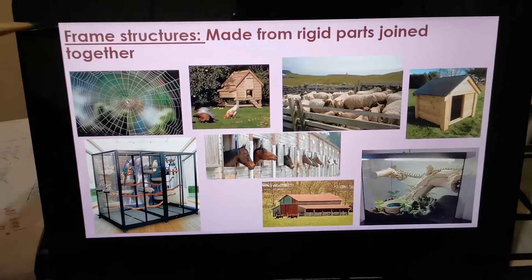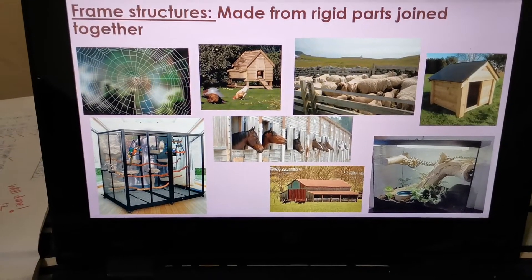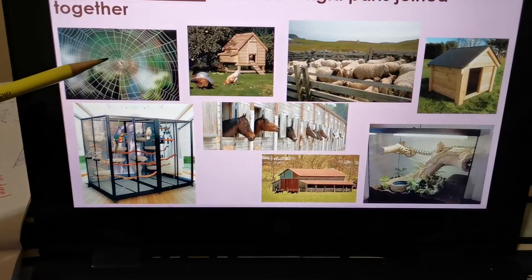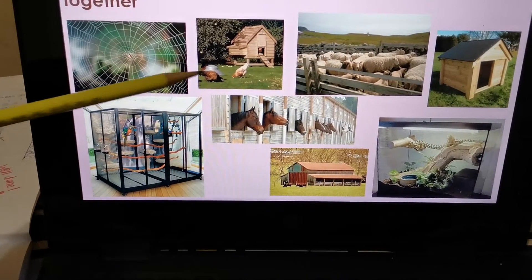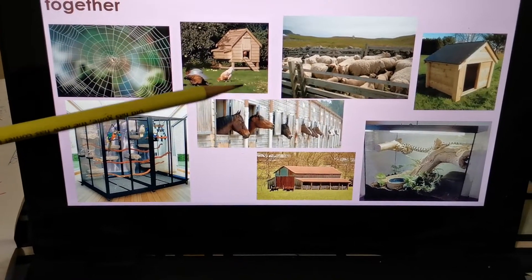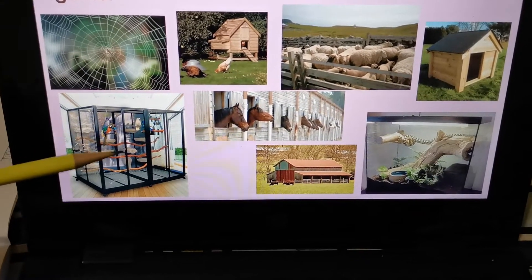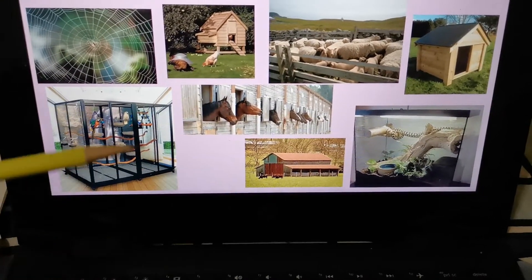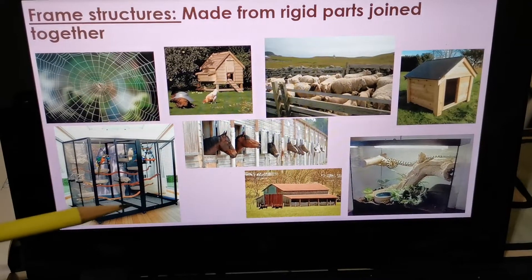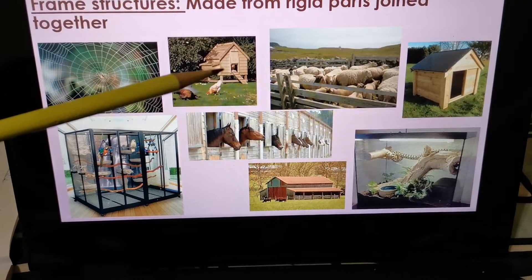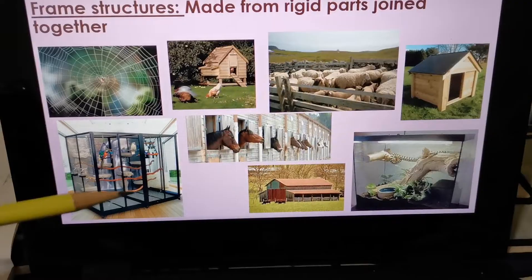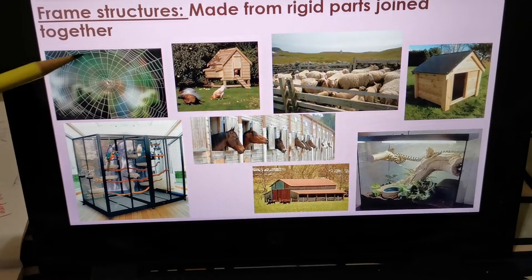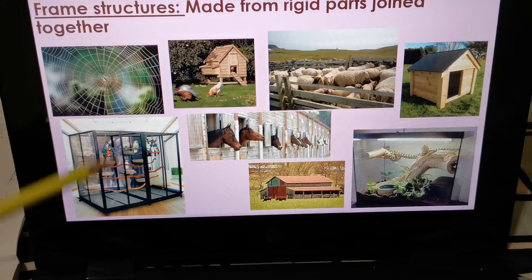We're going to look at frame structures — animal shelters with frame structures. Frame structures are made from rigid parts joined together. Here we have a couple of frame structures: a spider's web, different parts joined together; a chicken's coop, also different parts joined together; a sheep pen, dog kennel, bird's cage, horse stable, barn, and a terrarium. If you look carefully, most of these shelters have corners and are like triangles and squares. There's a little bit of a circle, but it's still different parts forming triangles. All of these are examples of frame structures.